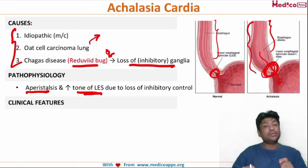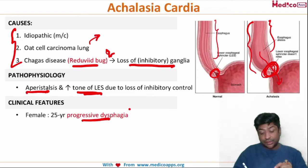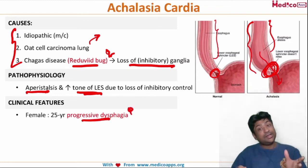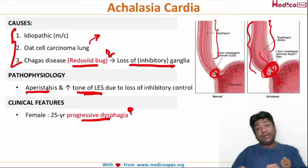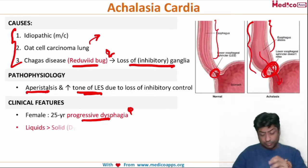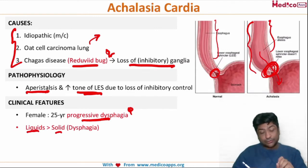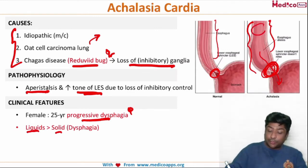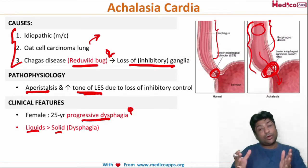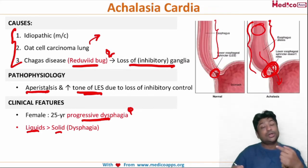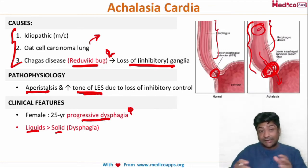These are relatively young patients — it is more common in females. You can have a 25 to 35 year old female complaining of progressive dysphagia. Here you have progressive dysphagia but in a much younger age group. The dysphagia will be more to liquids as compared to solids. The reason: solid food can put pressure on the wall of the esophagus and generate some peristalsis, and solid foods are heavier so they will put pressure on the lower esophageal sphincter and open it — that is why dysphagia is more towards liquids.